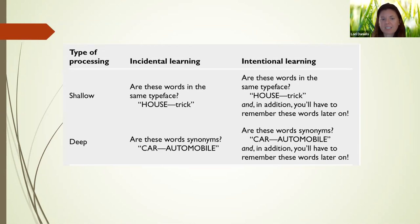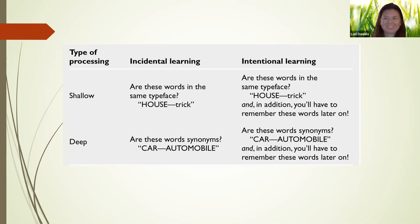In contrast, deeper processing forces you to think about the meaning — at least what something might mean. A question like 'are these words synonyms?' forces you, in order to answer it, to think about both words and whether they mean the same thing, like 'car' and 'automobile.' Sometimes you would see words that were not synonyms — like 'car' and 'fox' — and you simply answer no. But in order to do it, whether yes or no, you have to actually think about what the words mean.